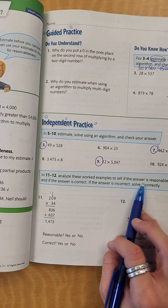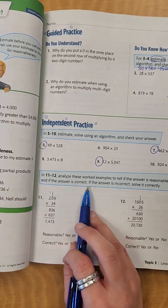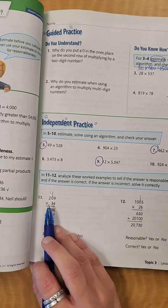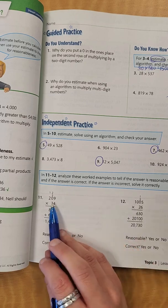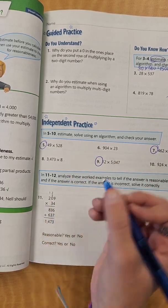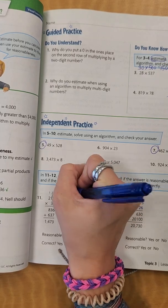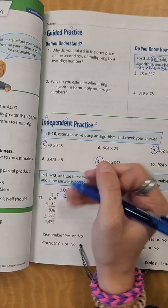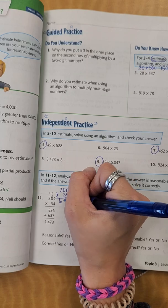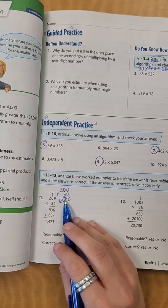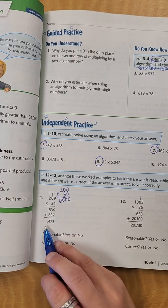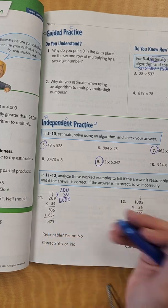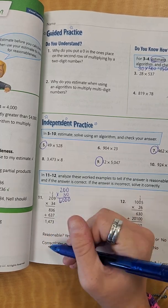On 11 and 12, it says analyze these worked examples to tell if the answer is reasonable. If the answer is incorrect, solve it correctly. So let's look and see if it is reasonable. So we have 209, so I would round that to 200, times 34, that would round to 30. So I know that 2 times 3 is 6, and then I add 1, 2, 3 zeros. So I see that this estimate is 6,000, and this right here is my answer. Does it seem like it's reasonable? No. It doesn't look reasonable to me, because that's a lot off.